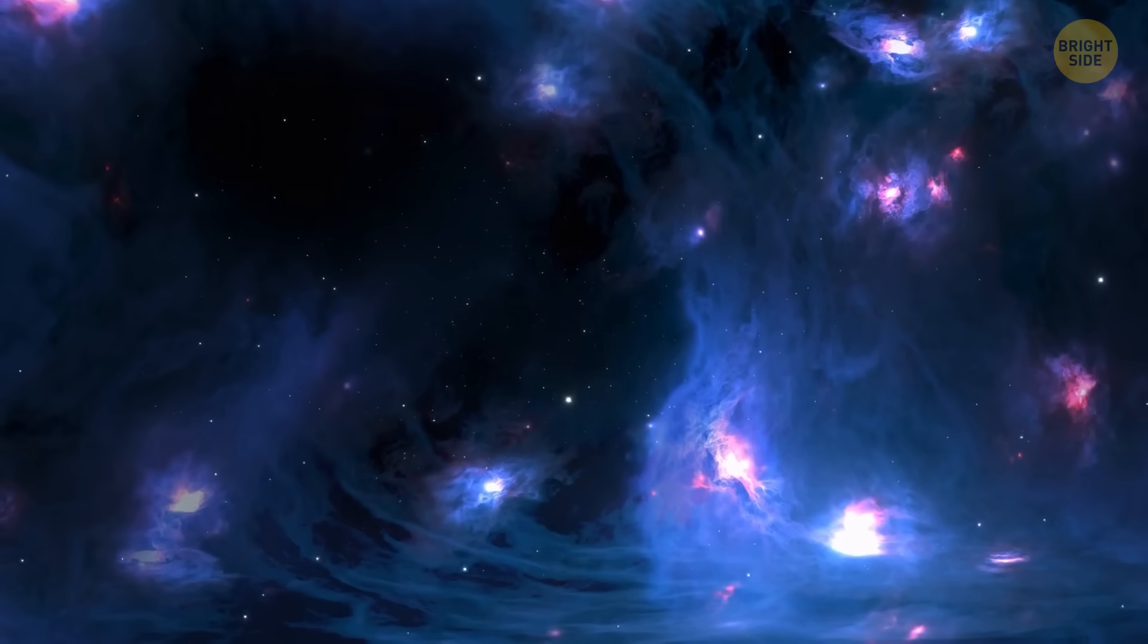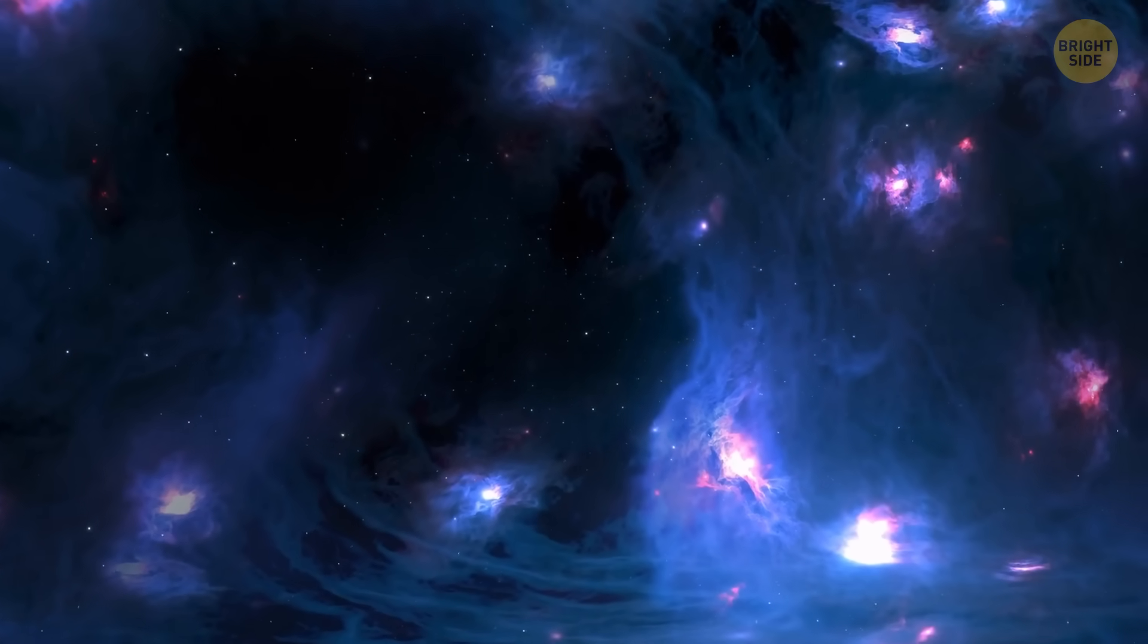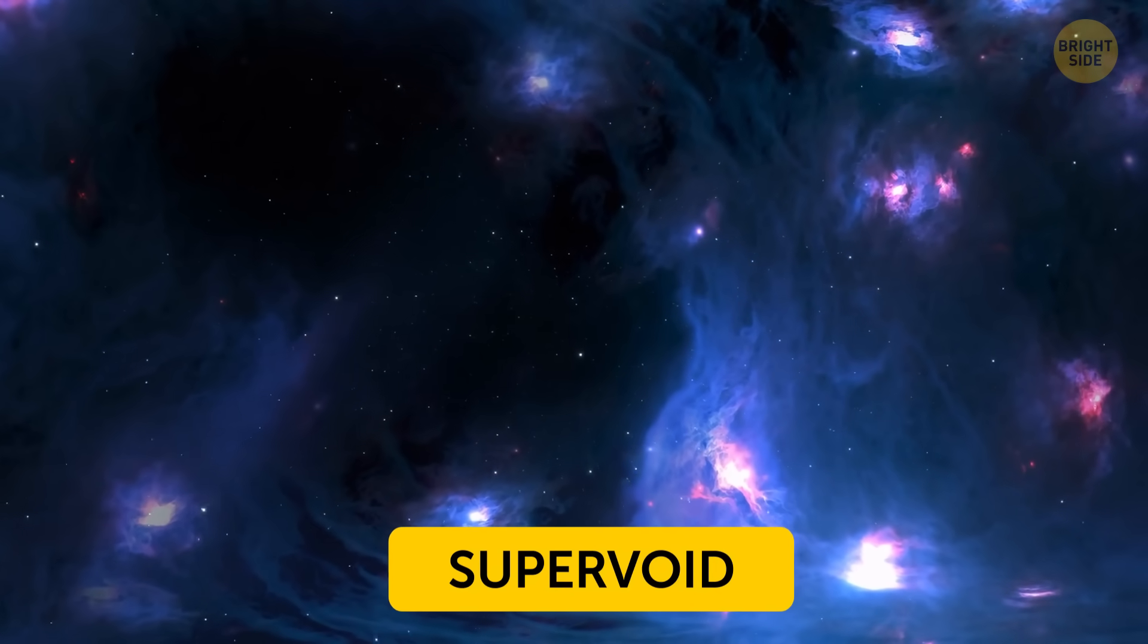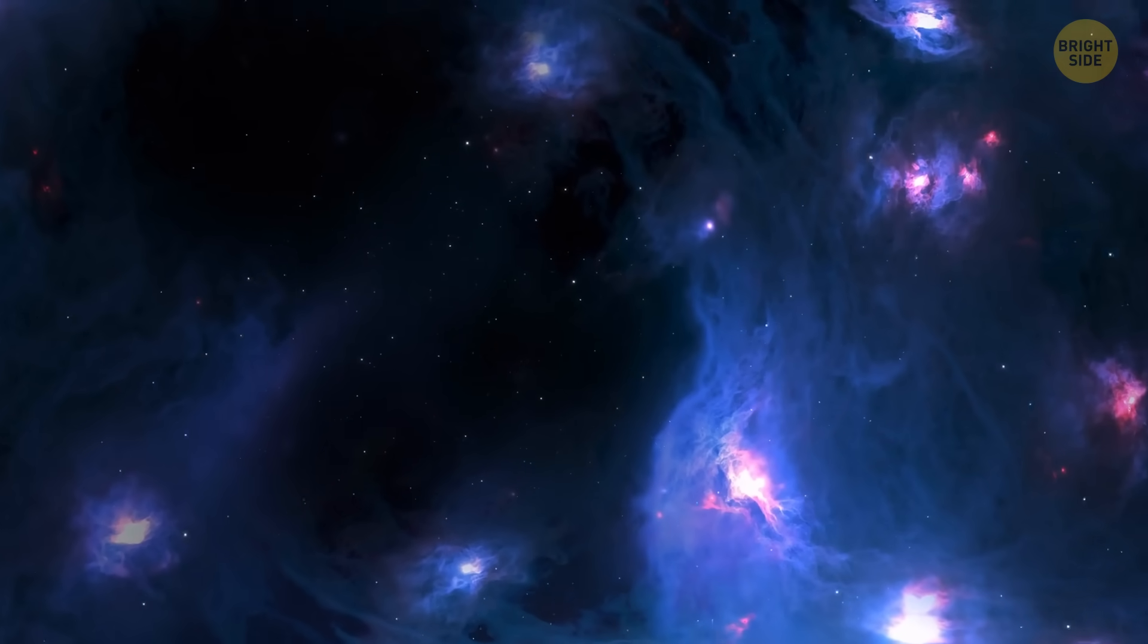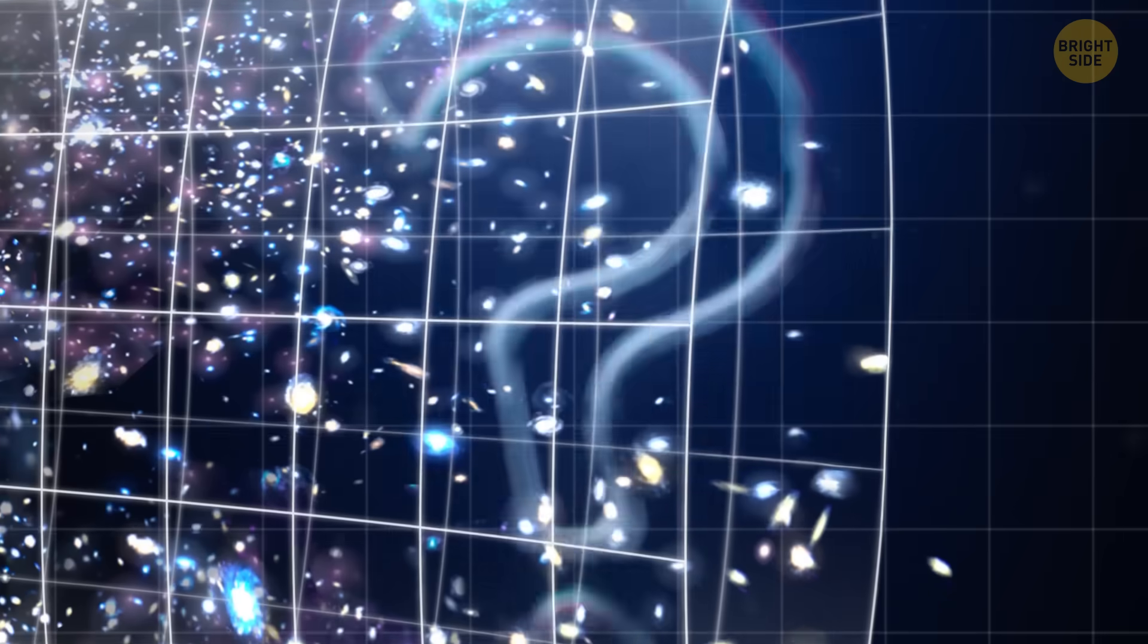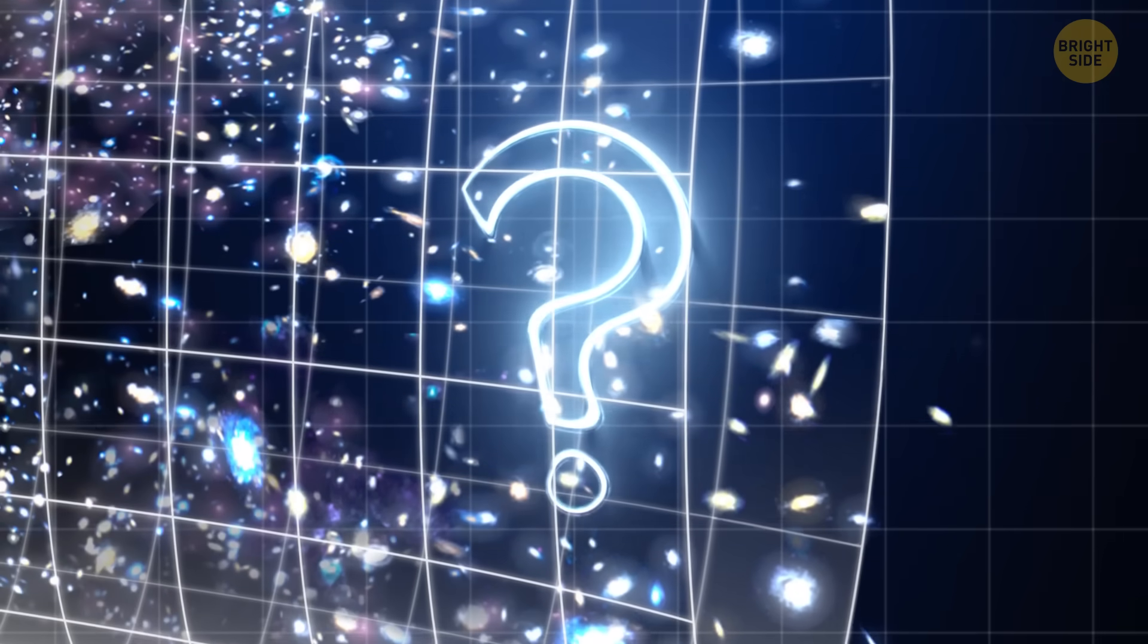The Boötes void is one of the most massive ones. It has even earned the title of supervoid. Astronomers think it might be the result of a few smaller voids merging. But what could have caused such giant empty areas to appear in the first place?